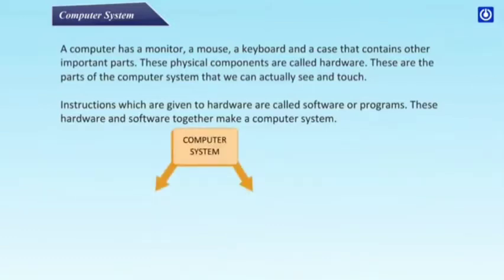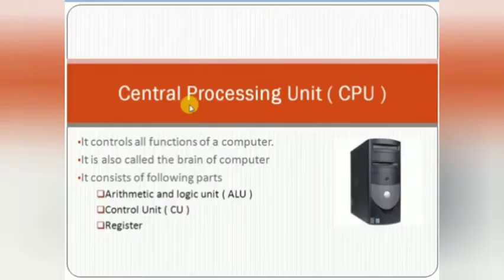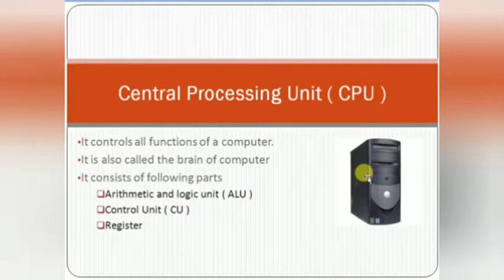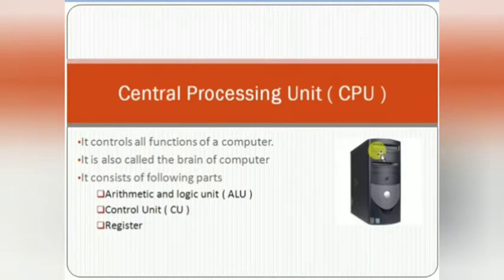The CPU is tower-based and basically looks like a brain of a computer. It controls all the functions of a computer — just like a brain controls all the functions of a human. CPU has basically three main units: the Arithmetic and Logic Unit (ALU), the Control Unit, and the Register.